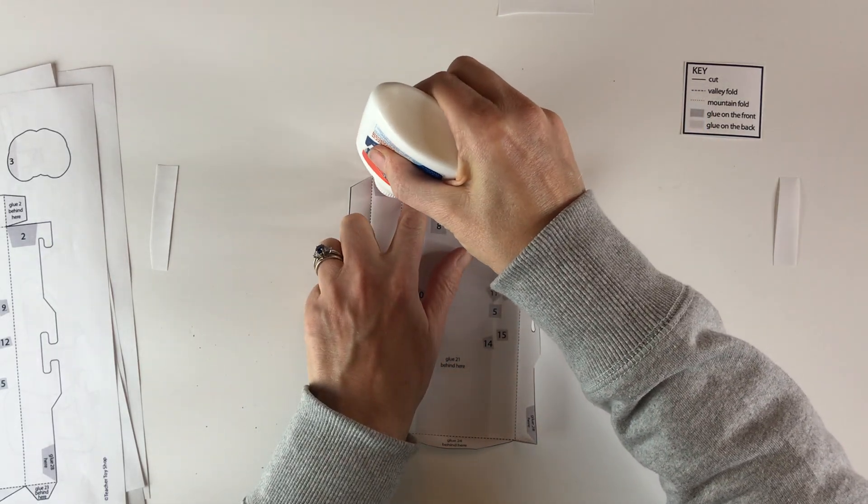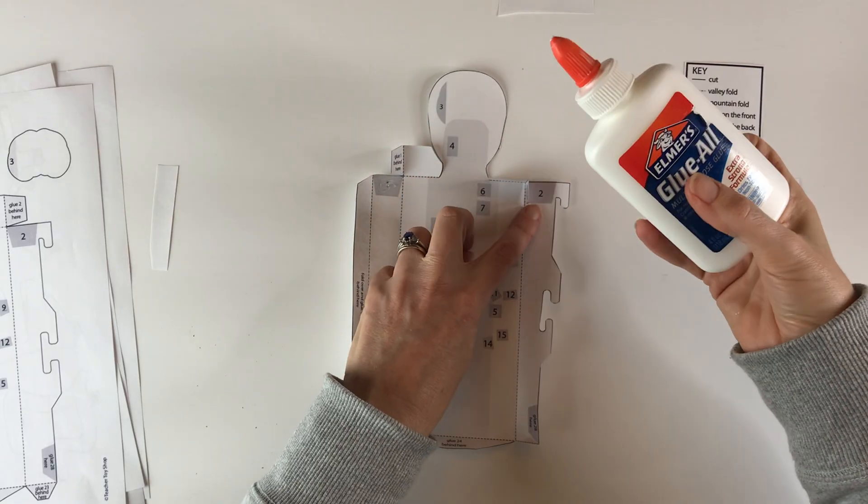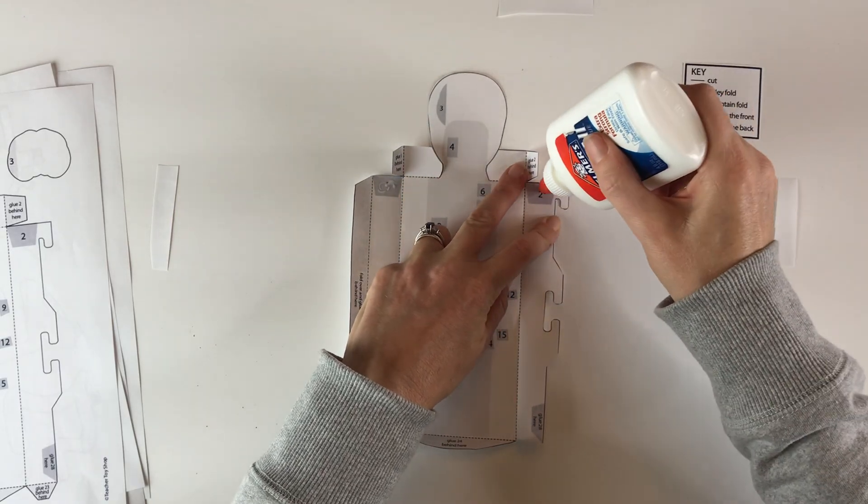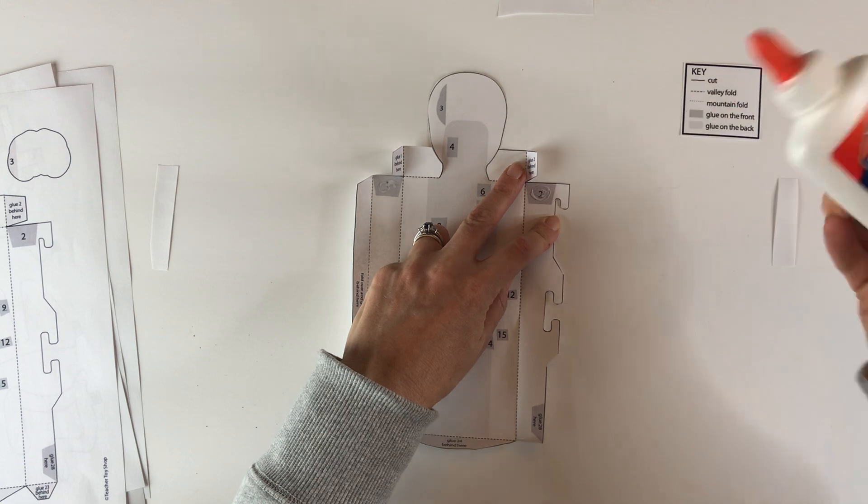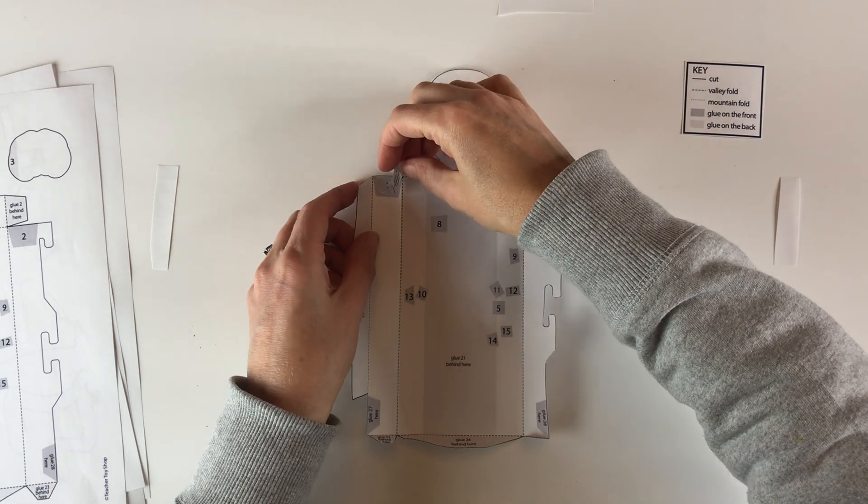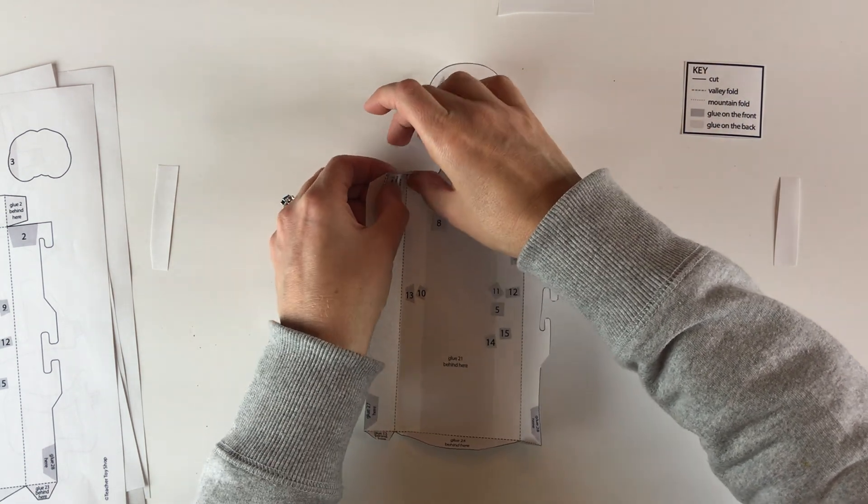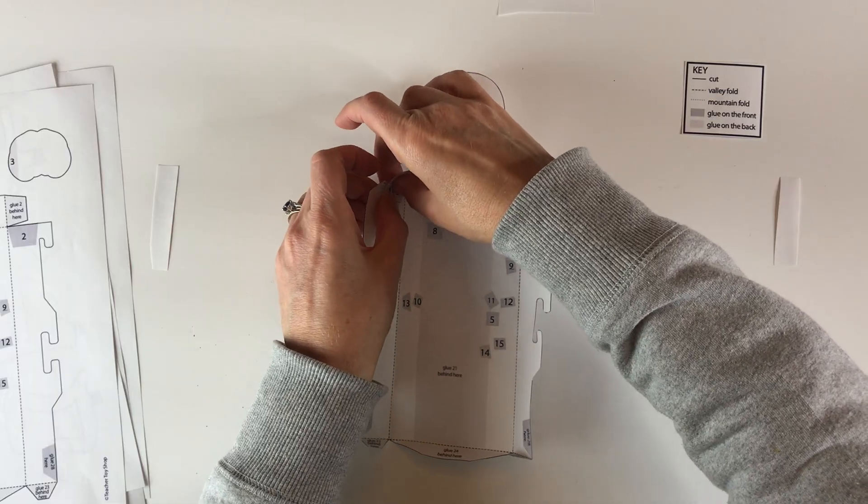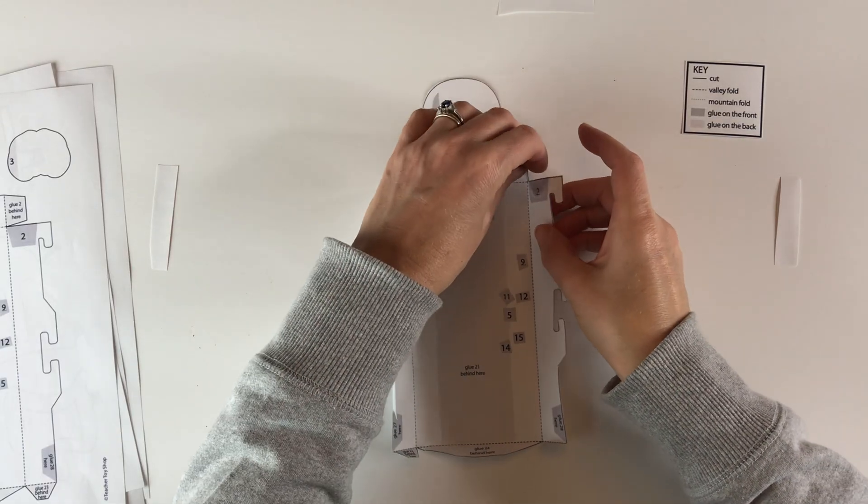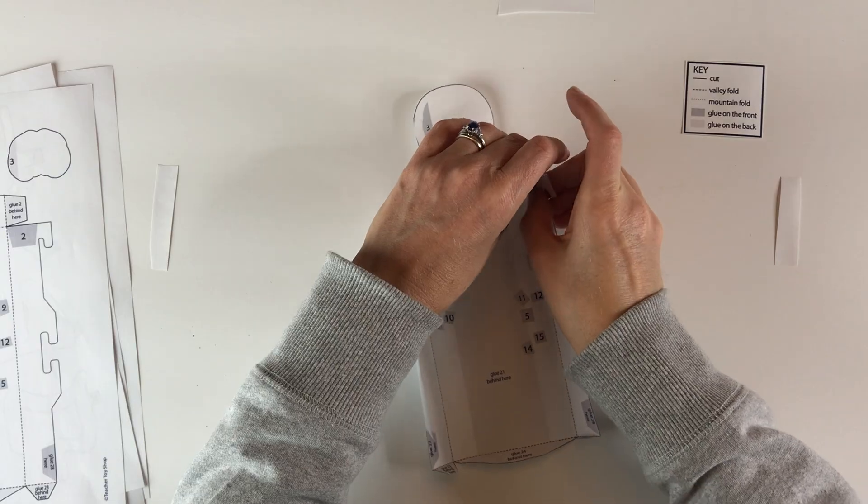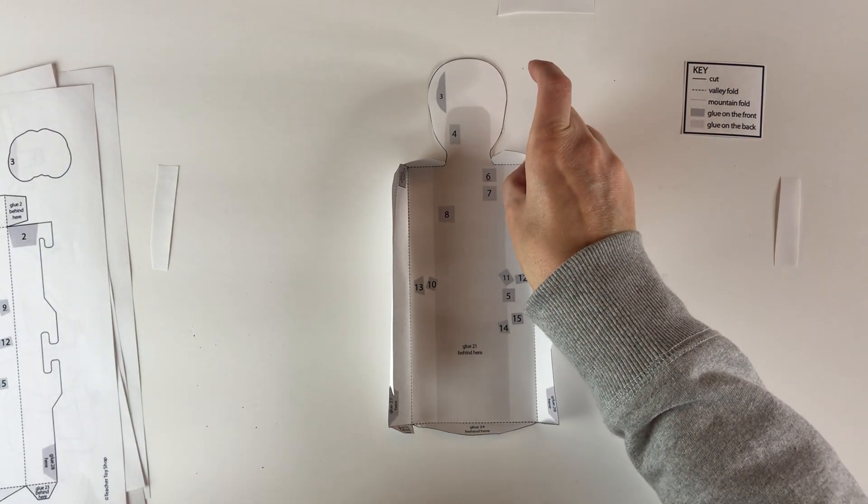So I put some glue on number one. Same thing here, glue two behind here, I put glue right here on number two, and just go ahead and fold. Just hold it so it dries there for a second, like so.